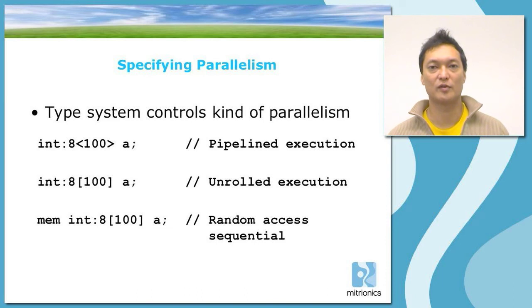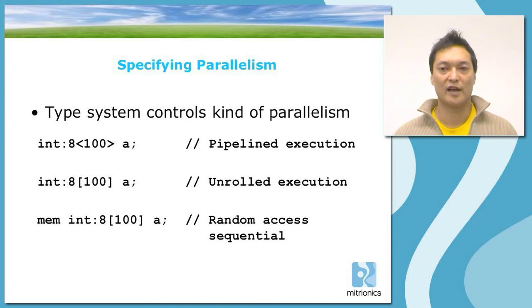A final example of how Mitrion C helps the programmer in understanding the parallelism of their program is the type system. The type system in Mitrion C helps to control the kind of parallelism that you have. In the first example, we have what we call a list. A list will give you a pipeline execution. Data in a list can only be accessed one element at a time in the order that it exists in the list. It is very similar to the standard abstract data type singly linked lists. The second example is a vector. A vector will give you unrolled execution. That is, all the elements of the vector will be operated on simultaneously.